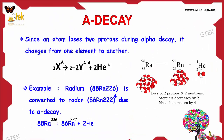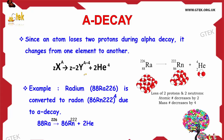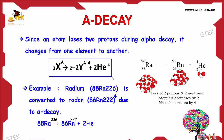Since an atom loses two protons during Alpha decay, it changes from one element to another. You can see the reaction here: X(Z,A) gives Y(Z-2, A-4) plus He-4(2).